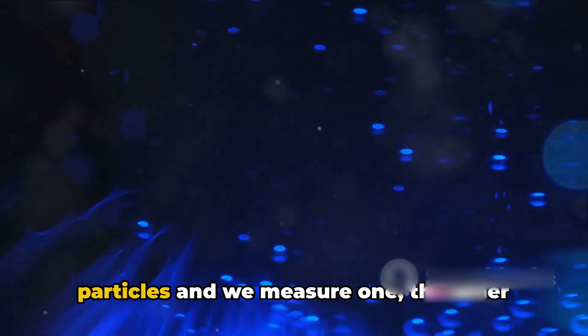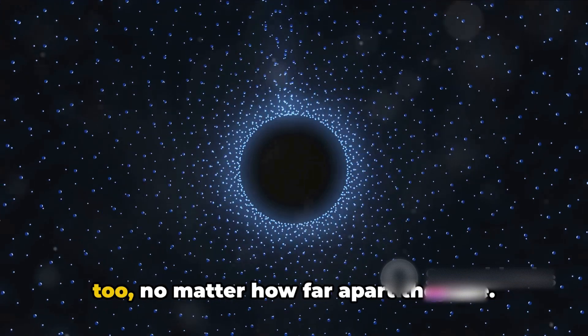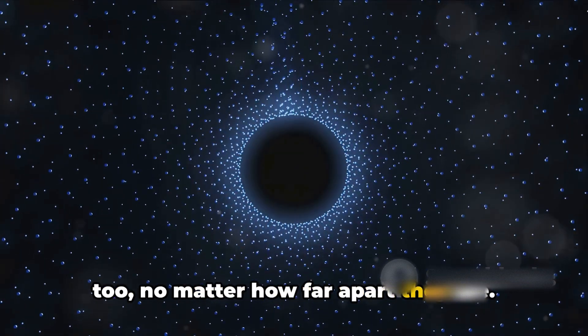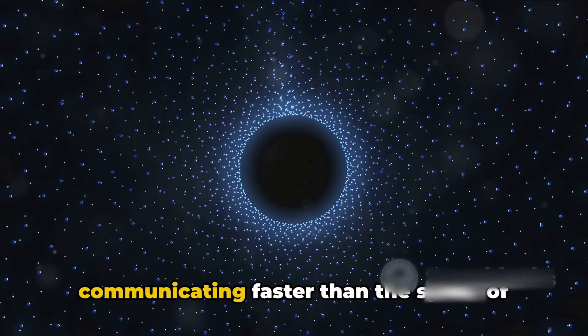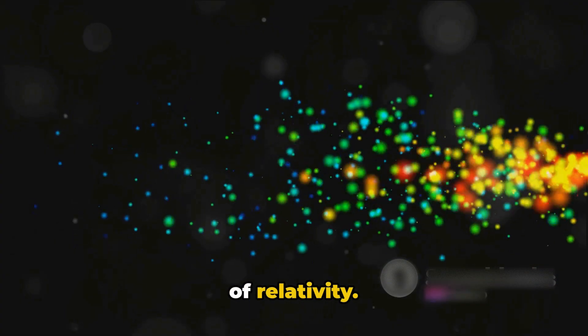Here's where it gets interesting. When we have a pair of entangled particles and we measure one, the other particle's state instantaneously collapses too, no matter how far apart they are. It's as though the particles are communicating faster than the speed of light, which contradicts Einstein's theory of relativity.